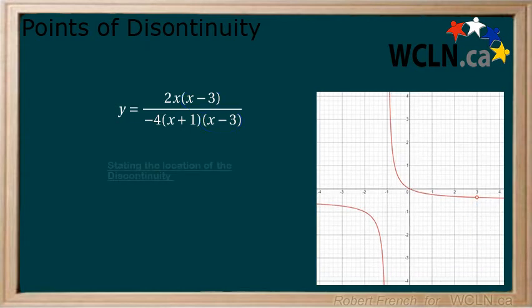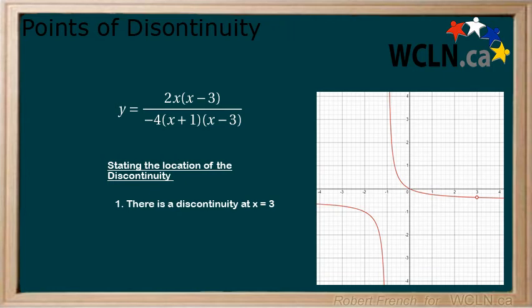There are two ways that we can state the location of a discontinuity. Think about domain. First, you can write that a discontinuity is at x equals 3. Or you can write that x cannot equal 3.